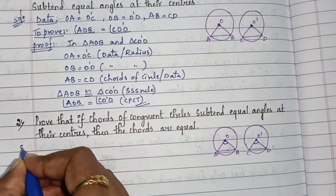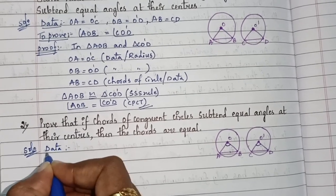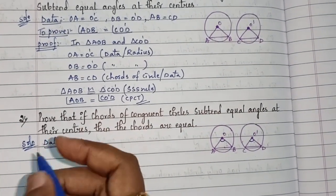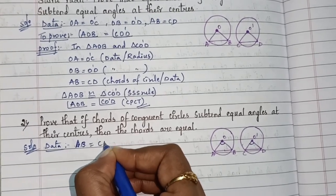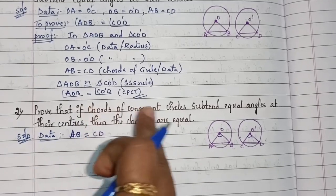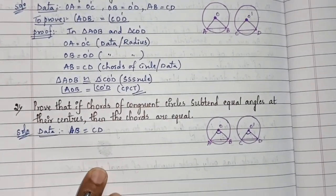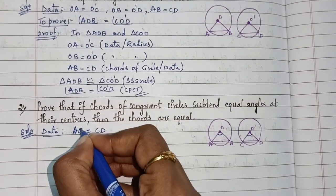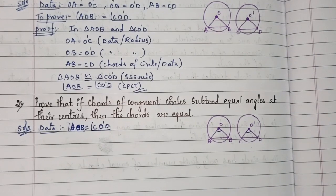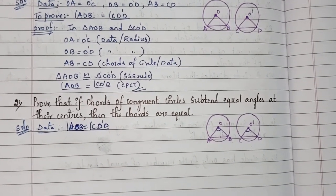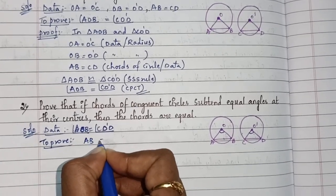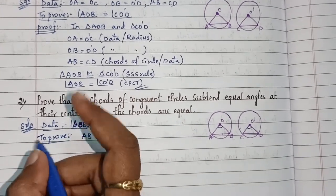For Question 2, the given data is: OA equals O'C and OB equals O'D, since both are radii of congruent circles. We are also given that angle AOB equals angle CO'D. What we need to prove is that AB equals CD.